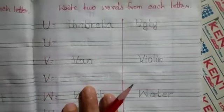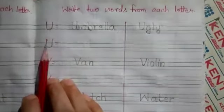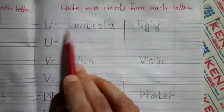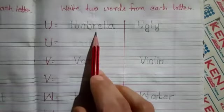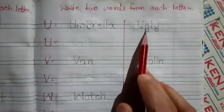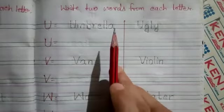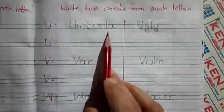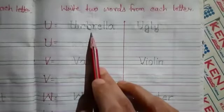So we will repeat. It is U for umbrella and ugly. U M B R E L L A, umbrella. Umbrella means chata.